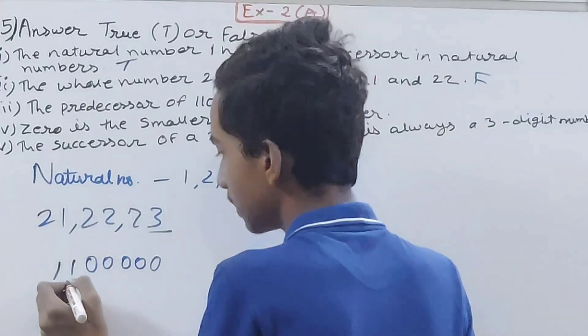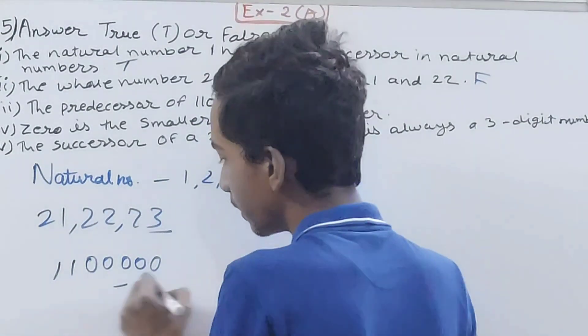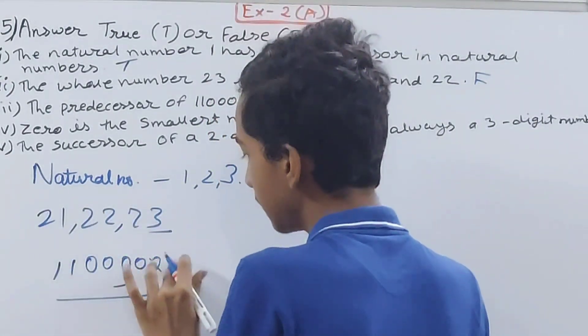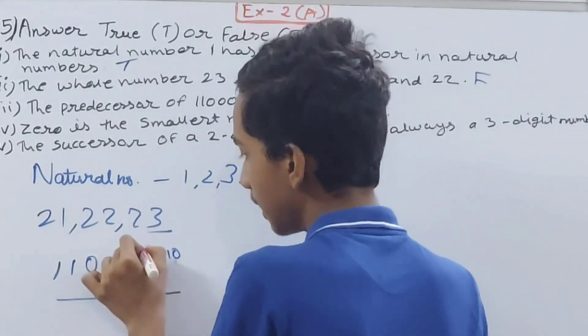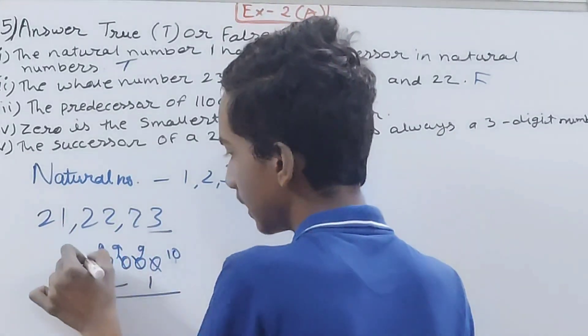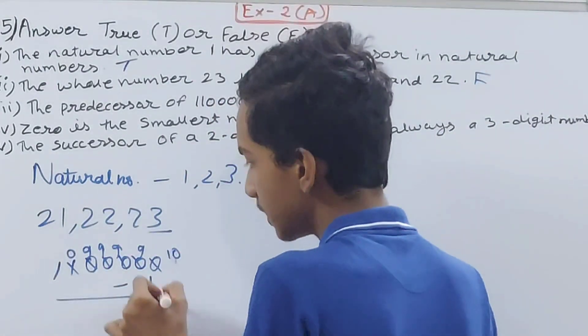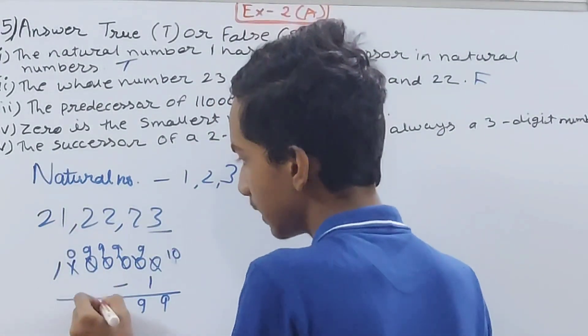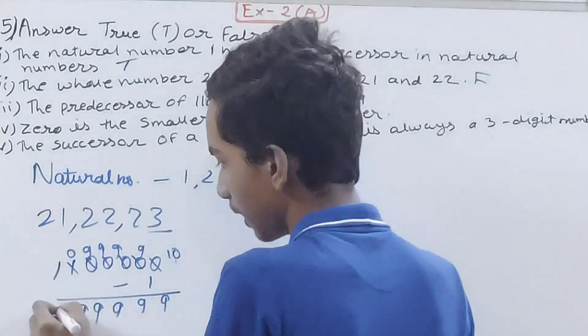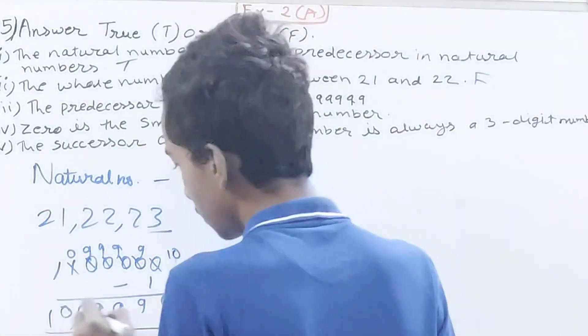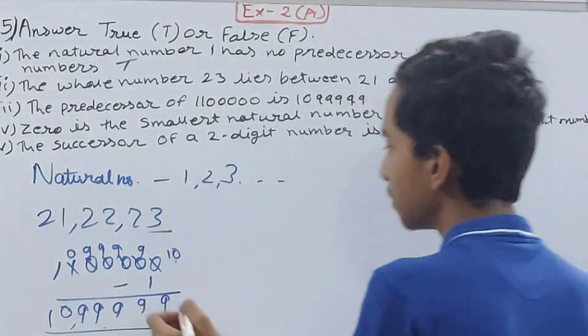This is 11 lakh, and this is predecessor, so you do minus 1. This will become 10, here, sorry, 10 lakh 99999. This will become 9 as well, this will become 0. 10 minus 1 is 9. 9 here as it is, as it is, as it is. And here 10, right? So what do you get here? 10 lakh 99999, which is given here. So this is also true.